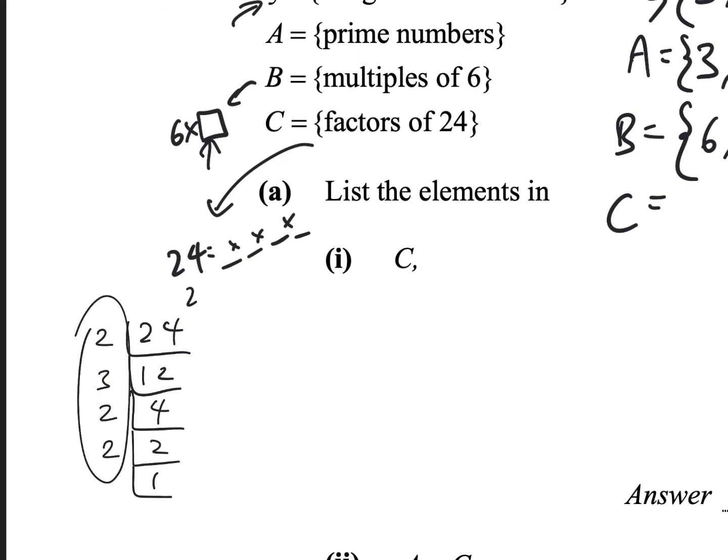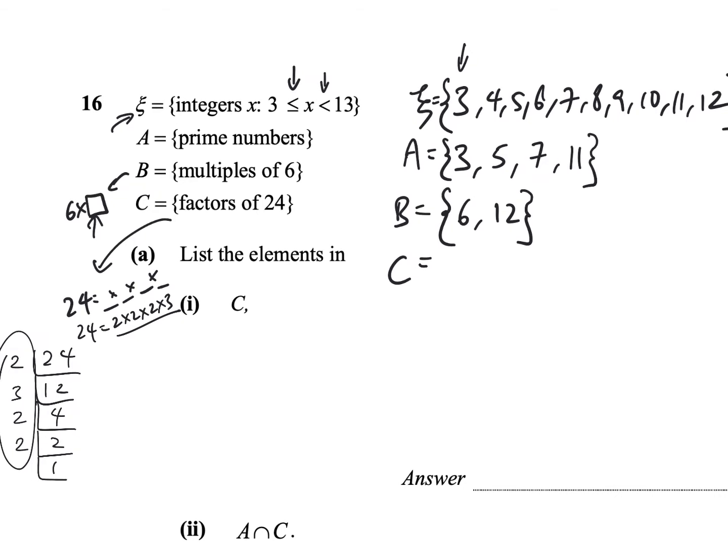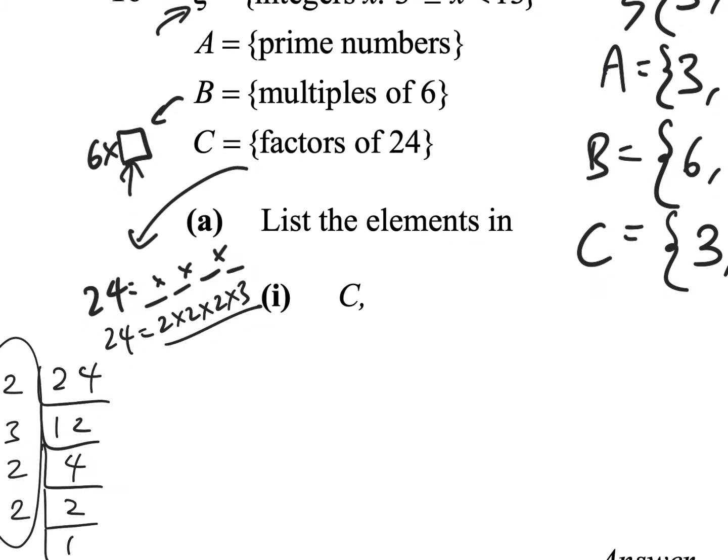So, I can say 24 equals to 2 times 2 times 2 times 3, and I've broken it down to all its prime factors. So, 2 and 3 are definitely inside, but in this case, 2 is not even in the universal set. There's no 2 here. So, we only take 3, but we're not done, because we can actually combine some of the factors, because we could say 2 times 2 is 4.